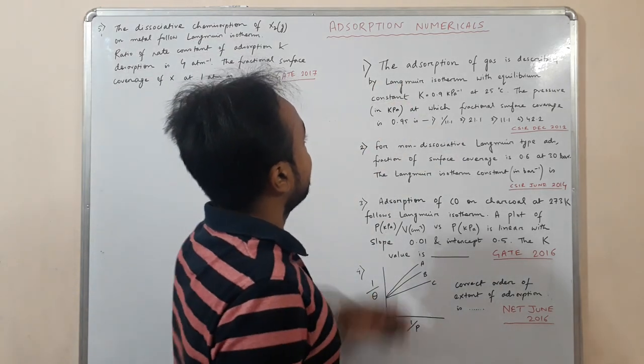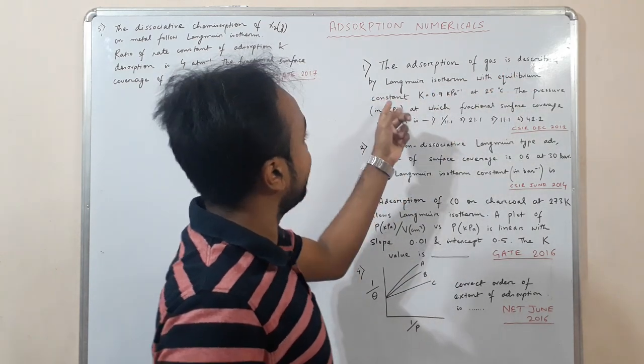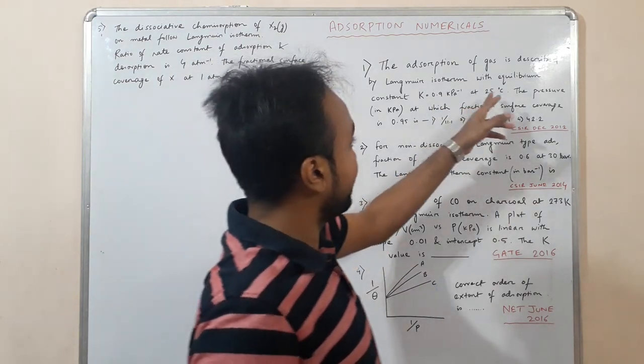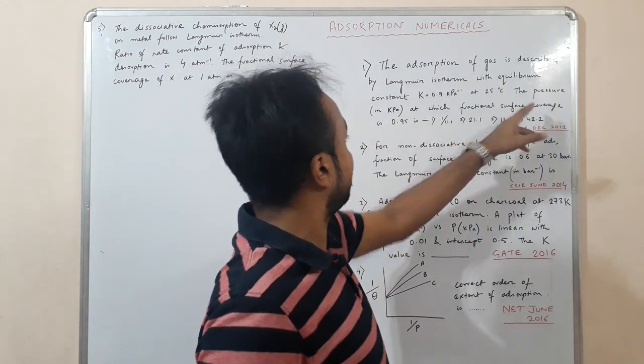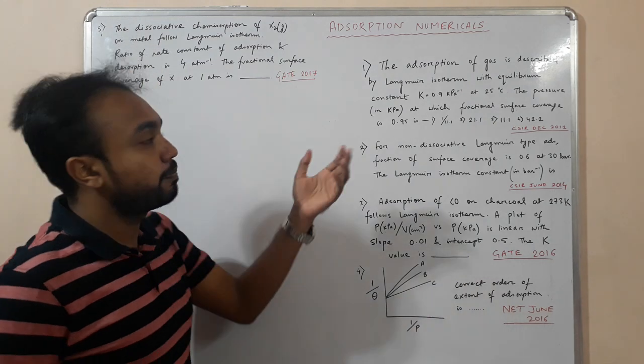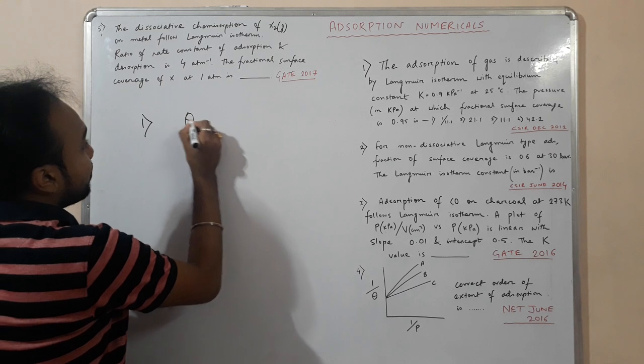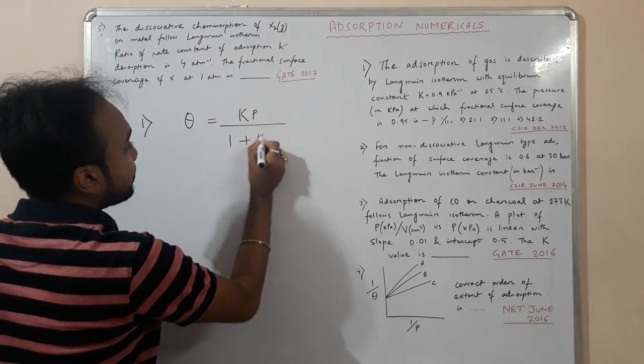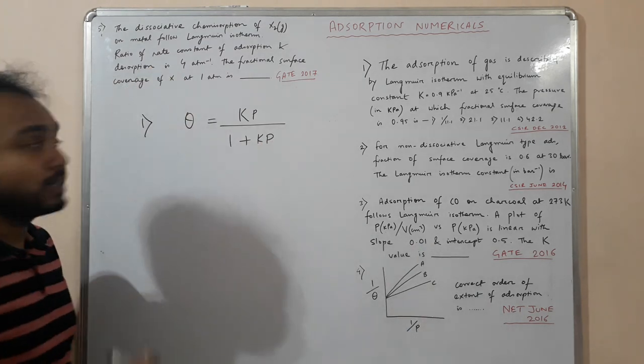The first one says the adsorption of gas is described by Langmuir isotherm with equilibrium constant K equals 0.9 kilopascal inverse at 25 degree centigrade, and the pressure in kilopascal at which fractional surface coverage is 0.95. We have to find the pressure. As you know the formula, theta equals Kp by 1 plus Kp.